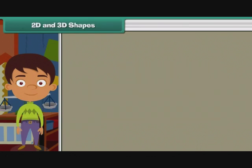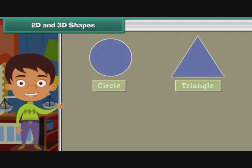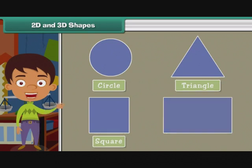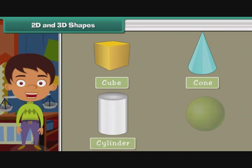2D and 3D shapes. Now let us talk about two dimensional or 2D shapes. Some 2D shapes are circle, triangle, square, and rectangle. Some three dimensional or 3D shapes are cube, cone, cylinder, and sphere.